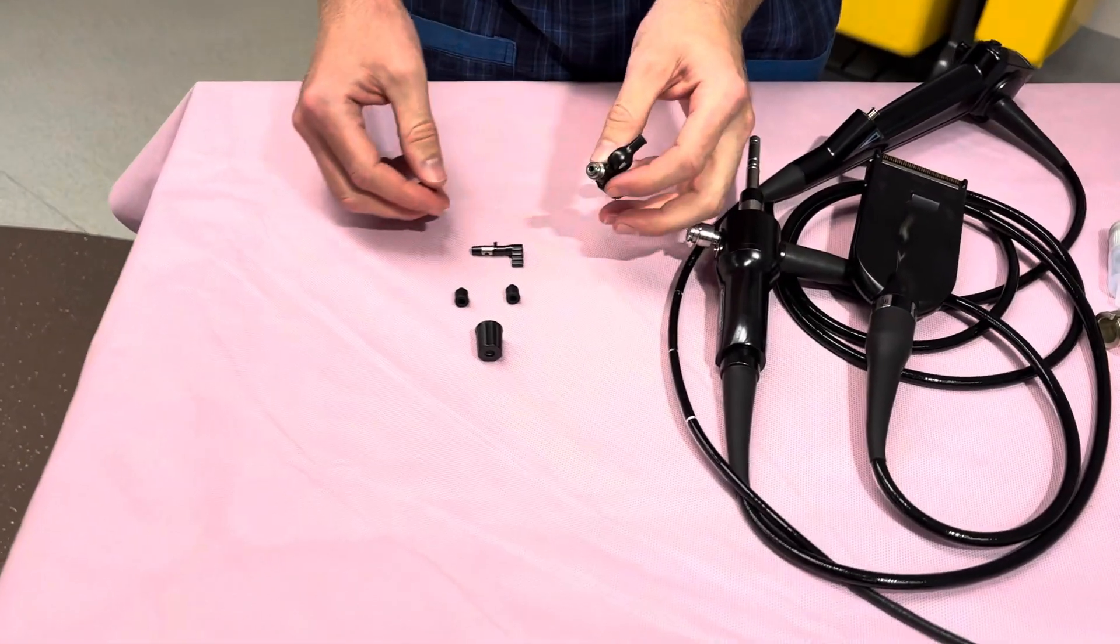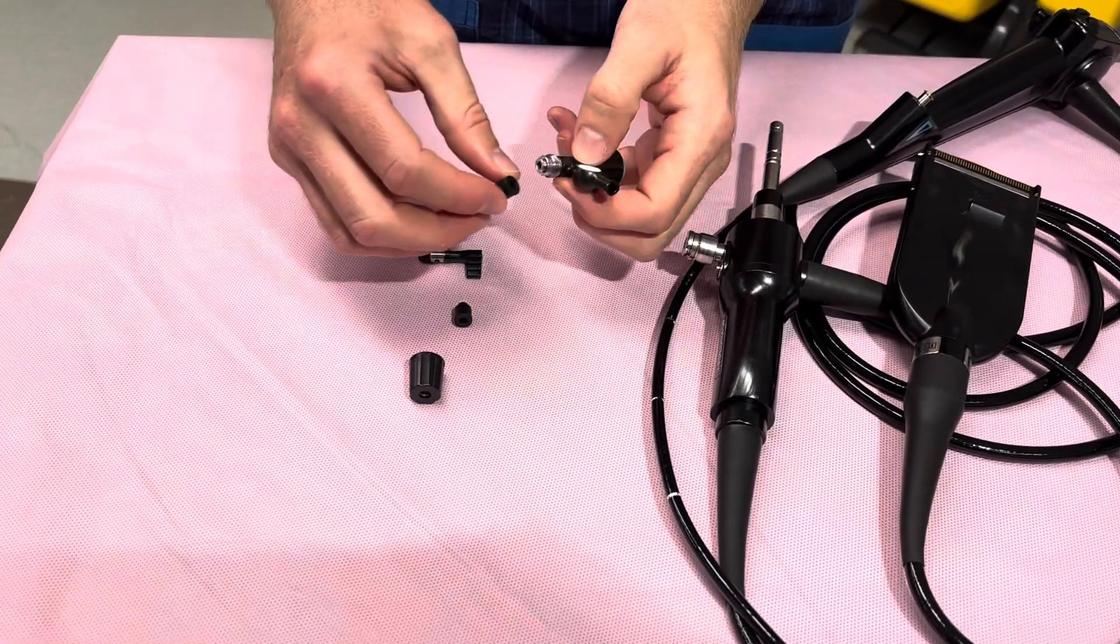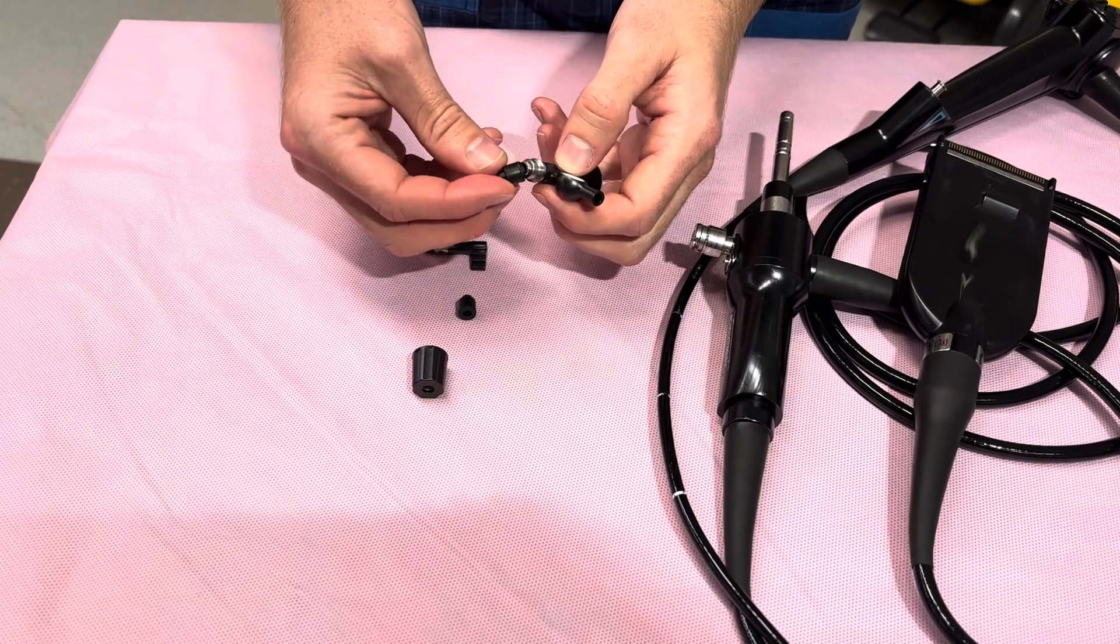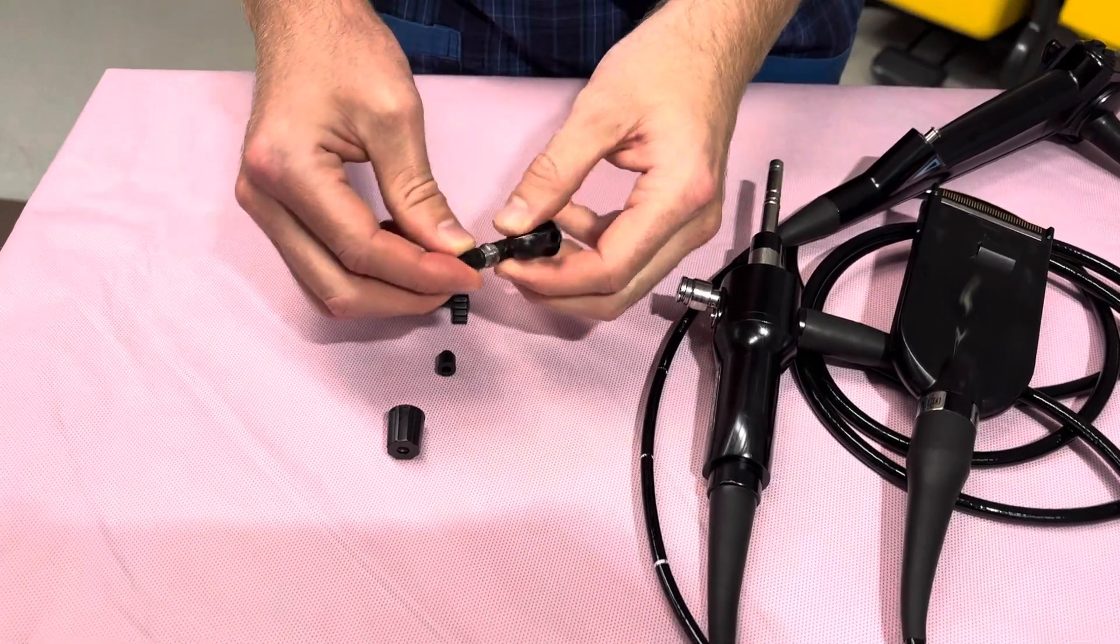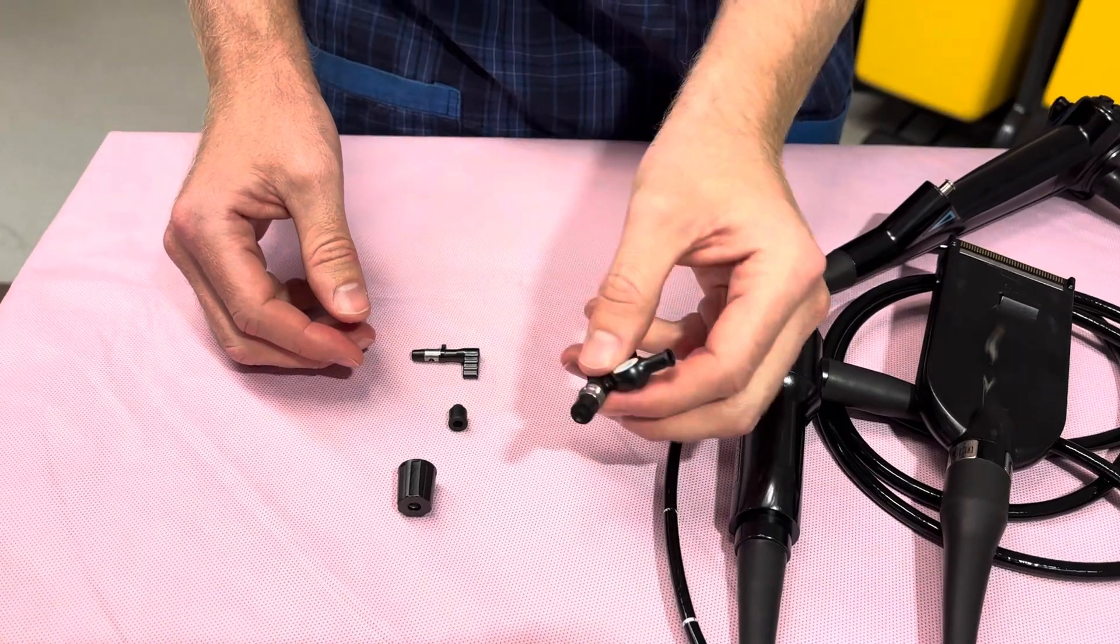Step three: grab a rubber bung and place it on top of the silver like that. Always make sure you do that step first and ensure it's sitting nice and flush.